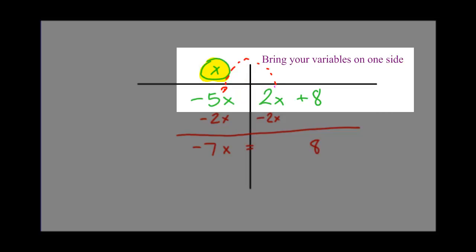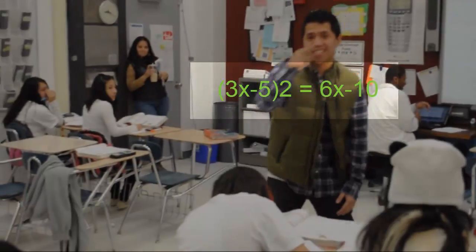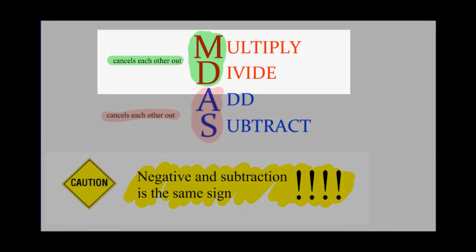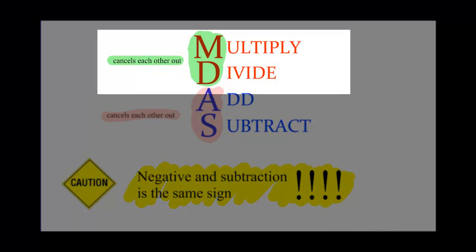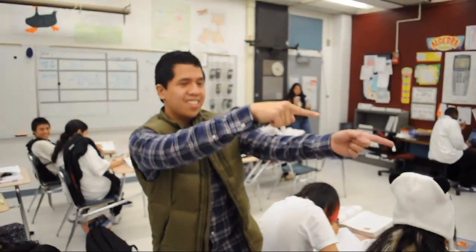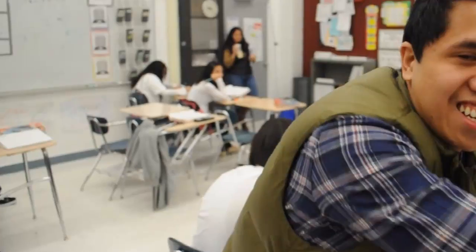Bring your variables together and make one side. Sometimes you combine like terms or you distribute. When Silva's talking, you should stay on mute. Negative and minus is the same, no lie. Division always cancels when you multiply. Just remember these rules so you know what's next. You could help that cutie next to your desk — you better not tell me that you learned nothing. The equation is solved when x equals something.